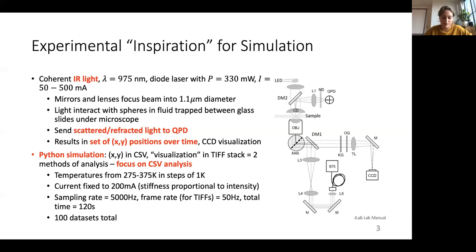And then the scattered light is sent off to a quadrant photo detector or QPD, which records the voltages of the scattered light, which we can then translate into the position of the bead in the x and y directions. We can also visualize the process with a white LED and a CCD camera. I will focus on using the analog of the QPD data, which is a set of x and y positions in a CSV file from the simulation written by Junong. And the simulation also produces a TIFF stack of images, which serves as the analog to the visualization with the CCD camera.